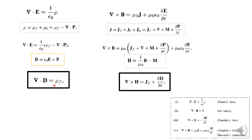The advantage of this modification is that we have separated the free charge density on the right-hand side. The diverging displacement vector del dot D now equals only the free charge density rho F.